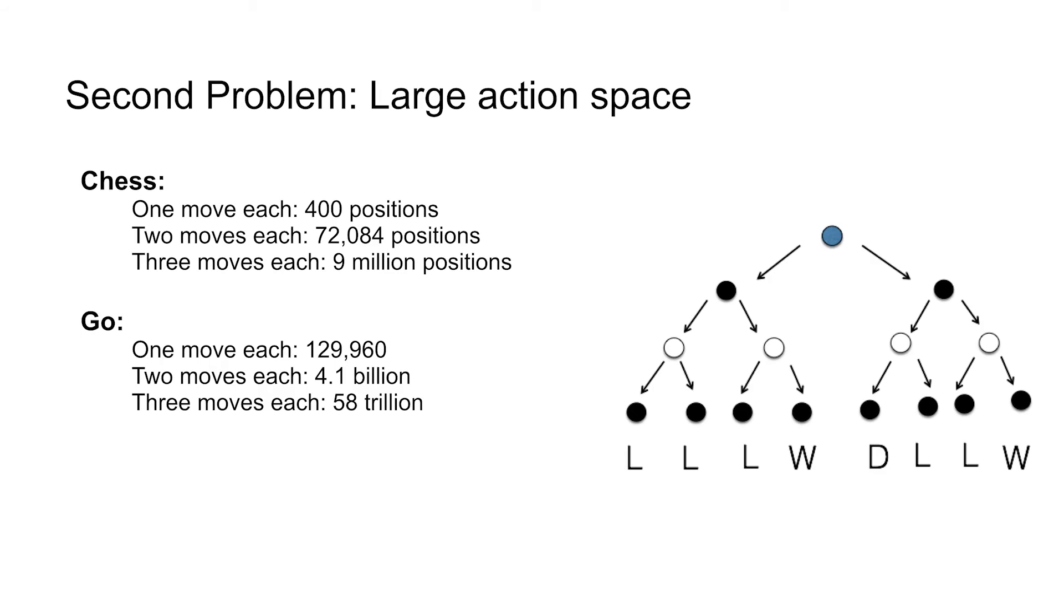The second really big problem with Go is that Go has a much larger action space than chess—how many moves can you make at a time? In chess, the very first move you can do 20 different things: all eight of your pawns can either go one or two up, and your horses can go to one or two places. In Go, the very opening move, there are 361 different moves you can make. If you're trying to think a couple of moves ahead, this effect compounds and makes huge differences. In chess, each person making three moves is nine million positions—that's a lot, but not so many for a computer. Whereas in Go, three moves each is 58 trillion moves, so that's a million times more than chess. The Go tree just expands a lot, which makes it very hard for computers to think that many moves ahead.